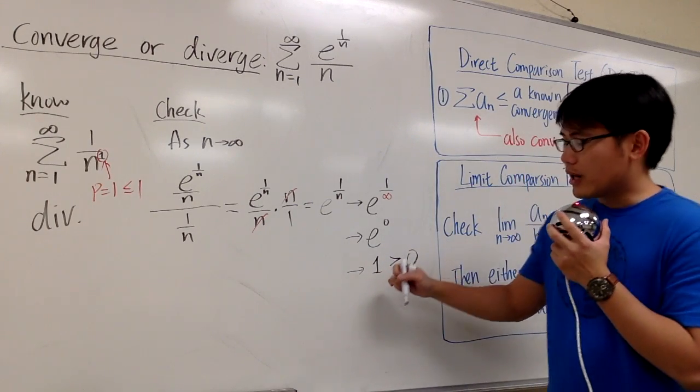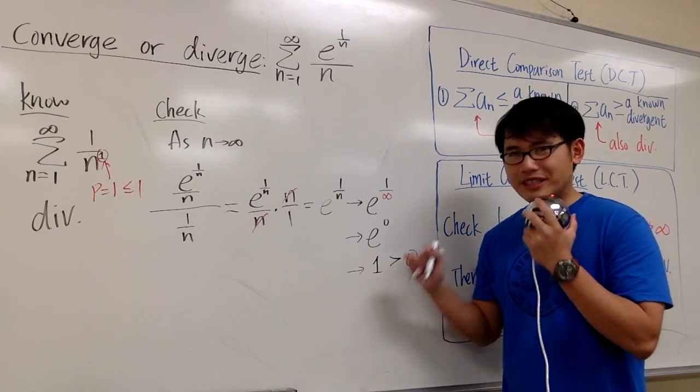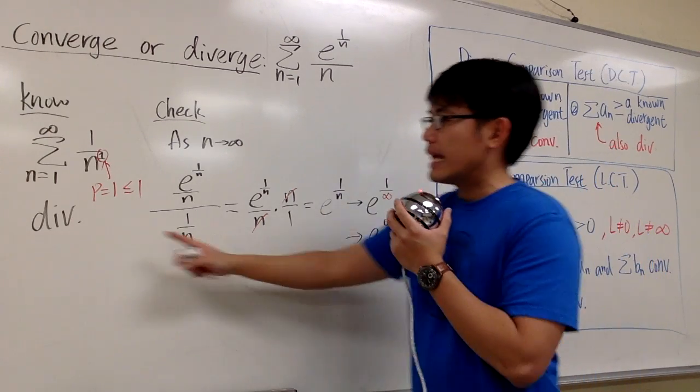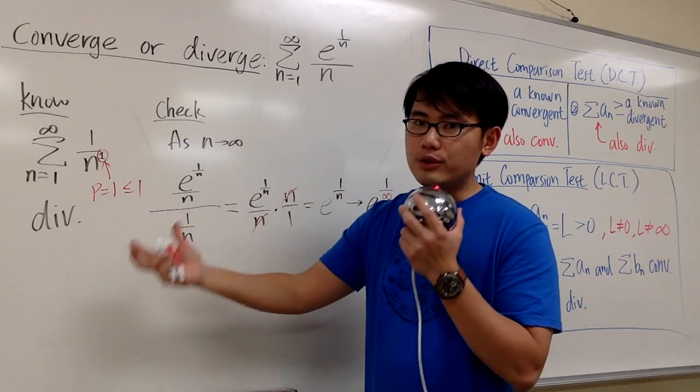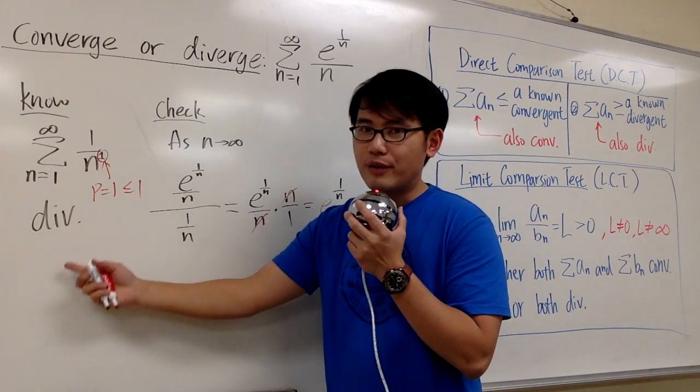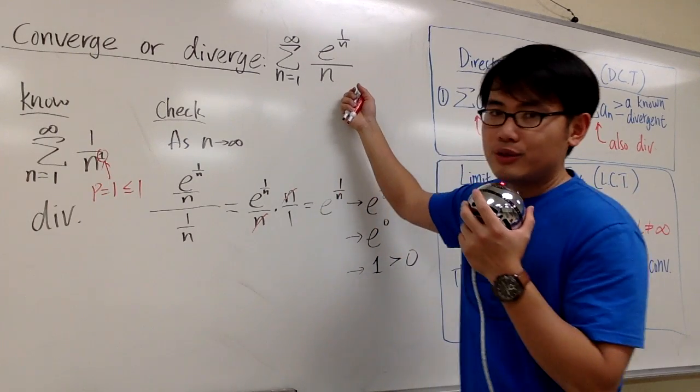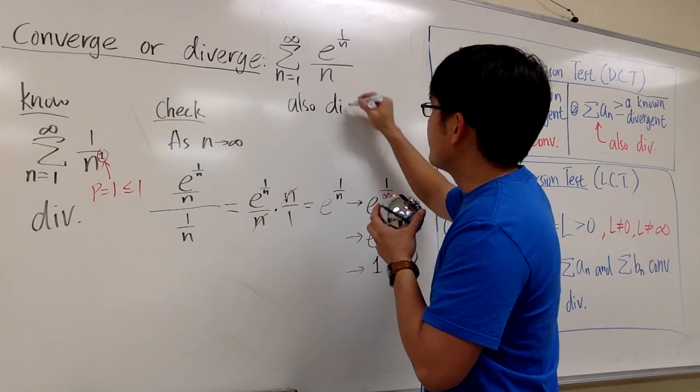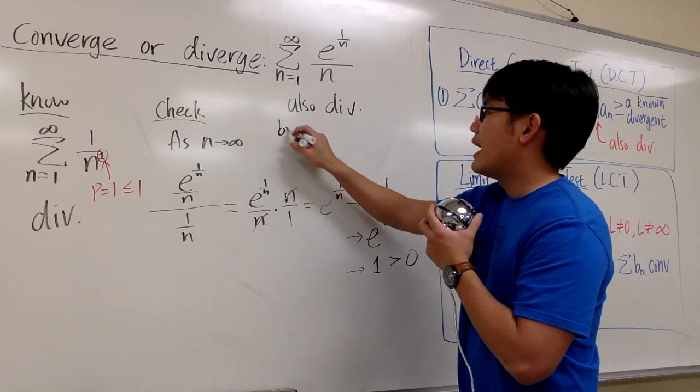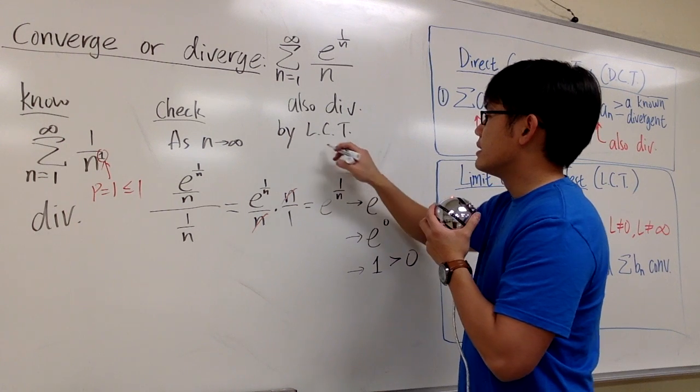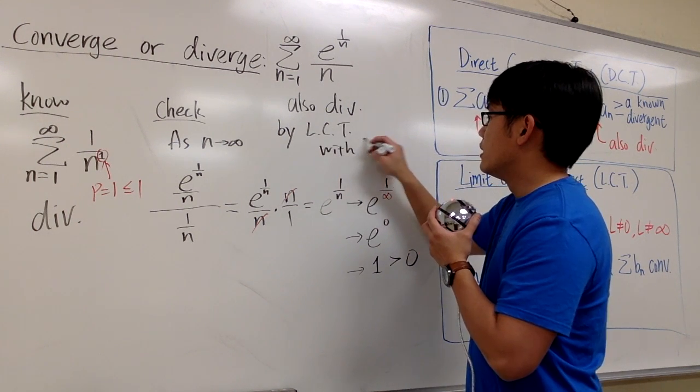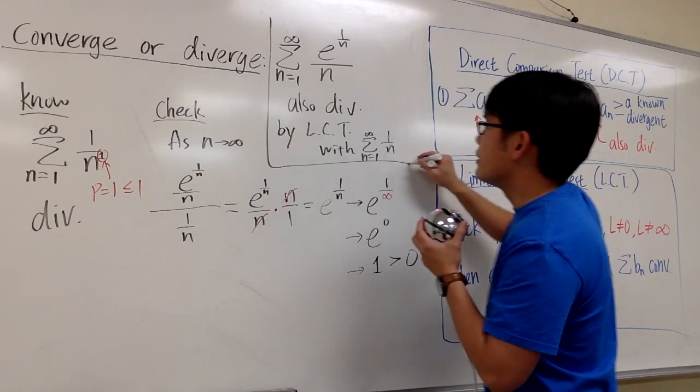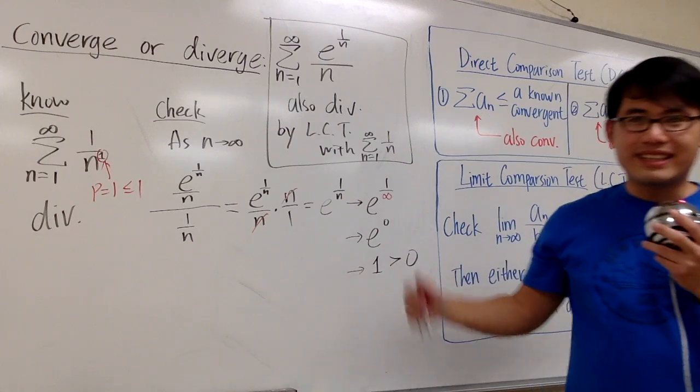We can draw conclusions based on the limit from the limit comparison test. The conclusion is that both series will either diverge or both converge. Since we know the harmonic series diverges, this series also diverges. The reason is by the limit comparison test with sigma as n goes from 1 to infinity, 1 over n. That's the conclusion.